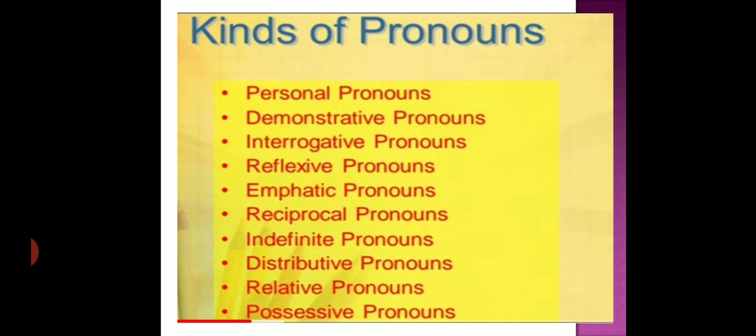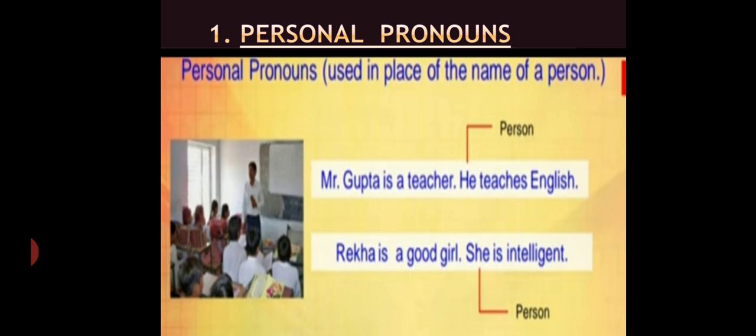We have nine kinds of pronouns. We will discuss them one by one. Let's start with number one, personal pronouns. Personal pronouns are used in place of name of a person.